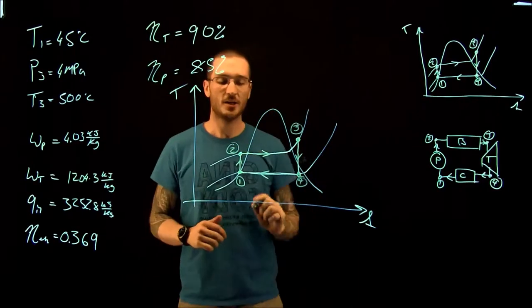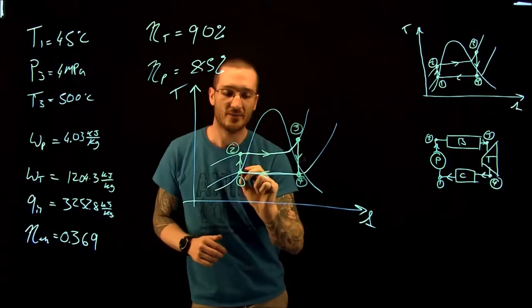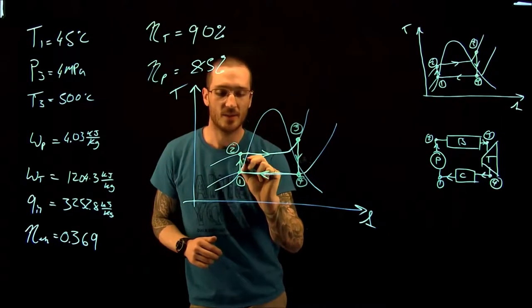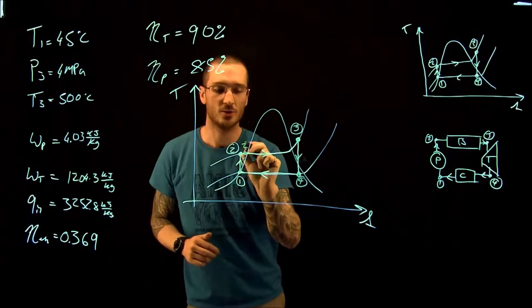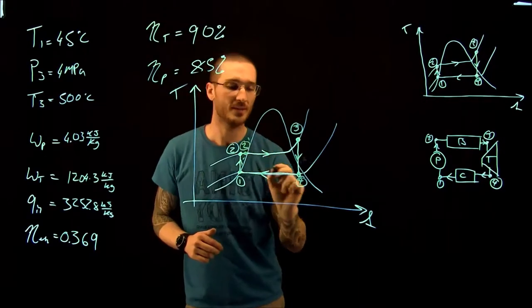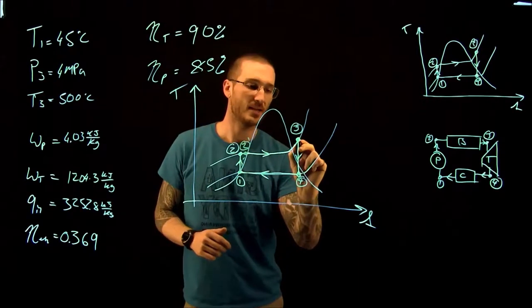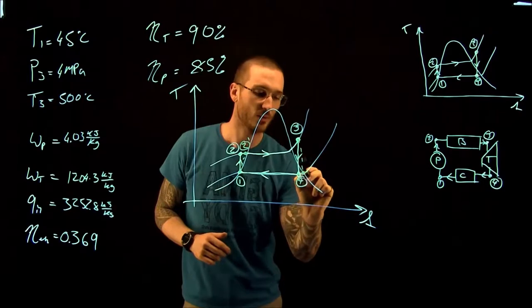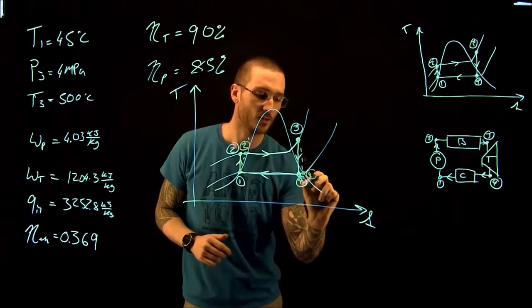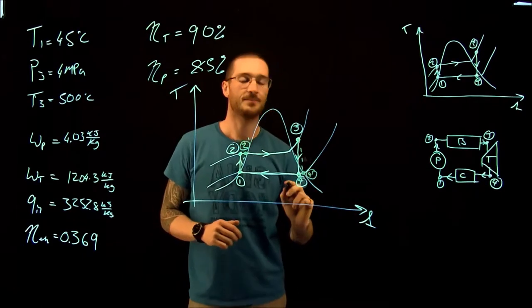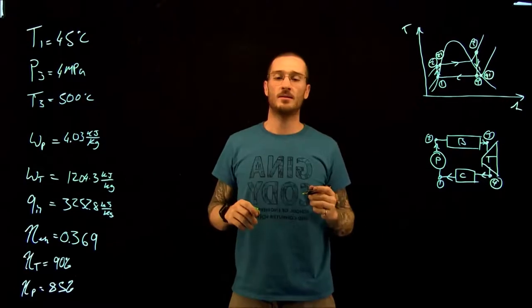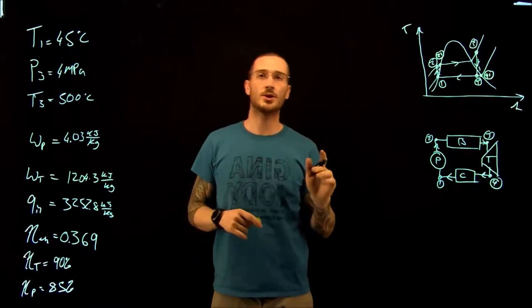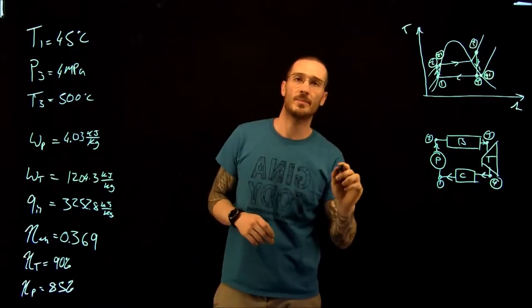The change here is that if we have inefficiencies in the pump, we go to this 0.2 prime. If we had inefficiencies in the turbine, we go to this 0.4 prime. Let's look at how these inefficiencies affect the work of the turbine and the work of the pump.